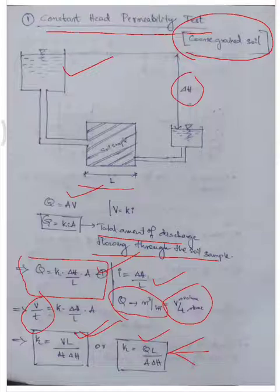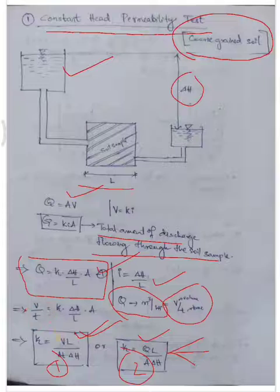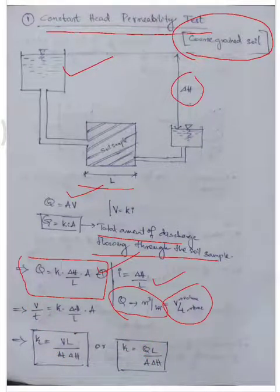Now the second test is the falling head permeability test. While the constant head test is used for coarse-grain soil, the falling head permeability test is used for fine-grain soil.